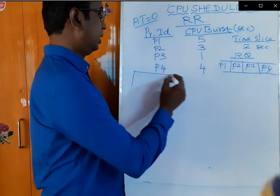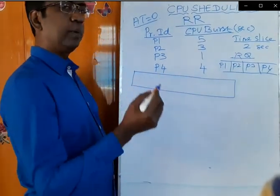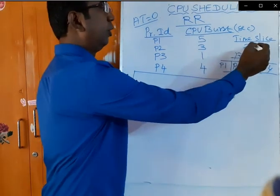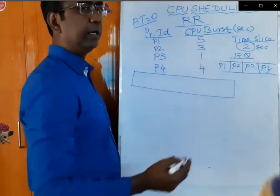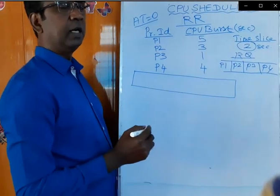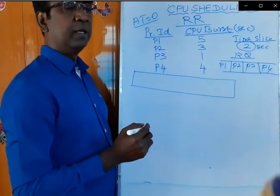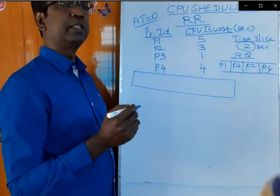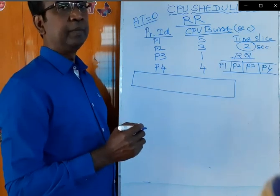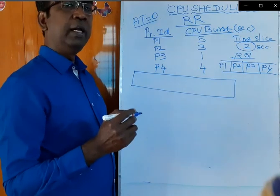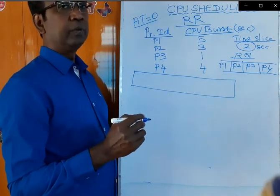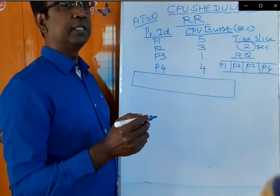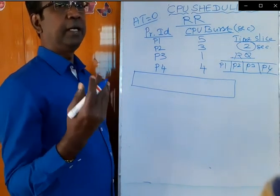Now let us consider the Gantt chart. First, which process will enter into the CPU? According to this example, P1 will enter first. Before that, we should know one important thing about time slice or time quantum. For round-robin scheduling, the time quantum or time slice is fixed as 2 seconds. So each process will be given a maximum of 2 seconds to be executed in the CPU at any given time. Once 2 seconds is completed, if the process still needs more execution time, its chance will be given last, after all other processes complete their turn.